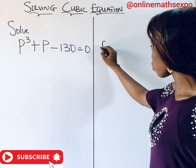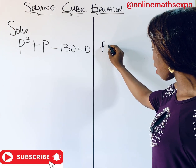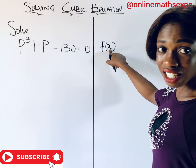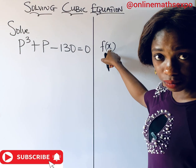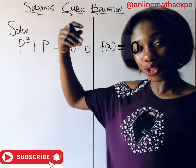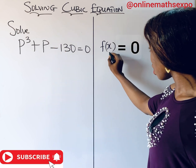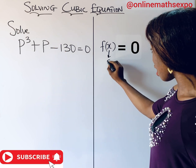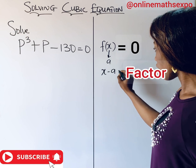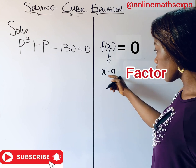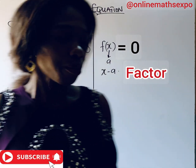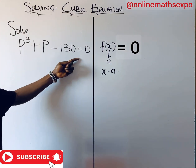The factor theorem says that if you have a function of x, then whenever you substitute the value of x into the function and it becomes equal to zero, it means that that value you substituted — supposing we substituted 'a' as a value of x — it means that x minus a is going to be a factor.